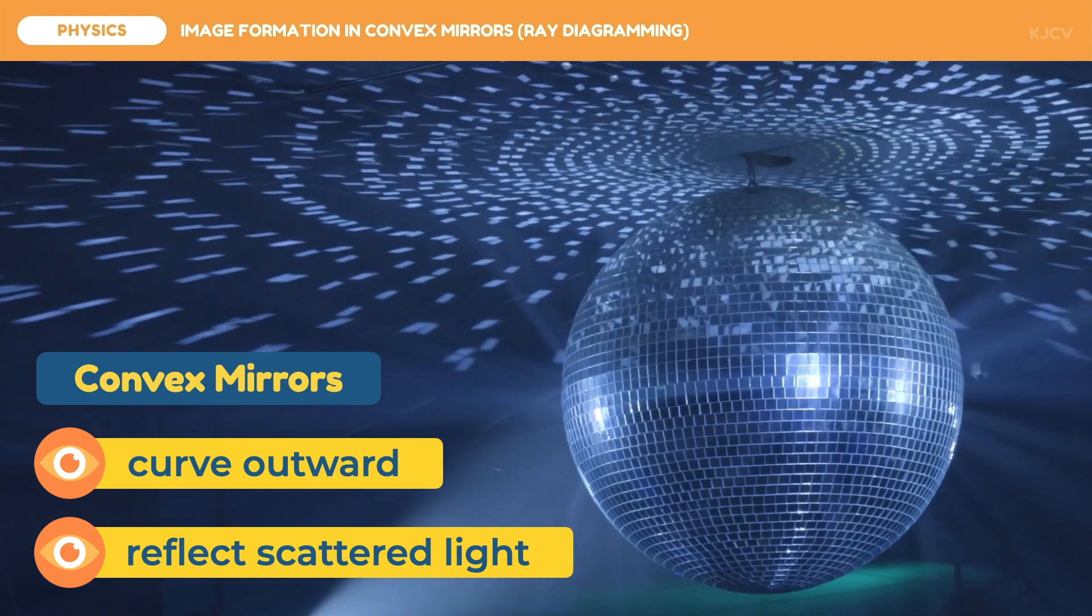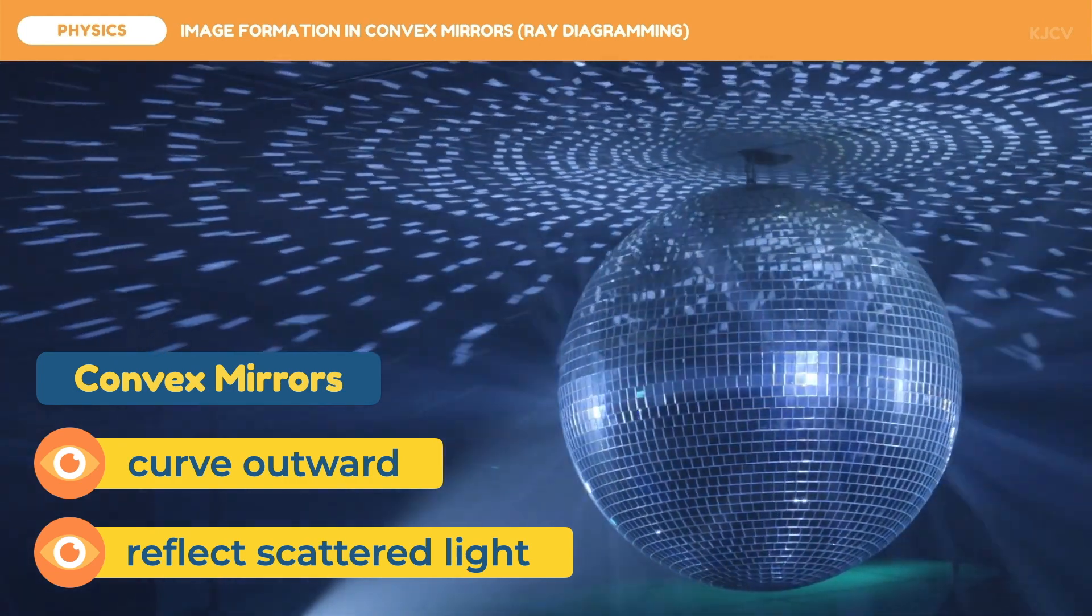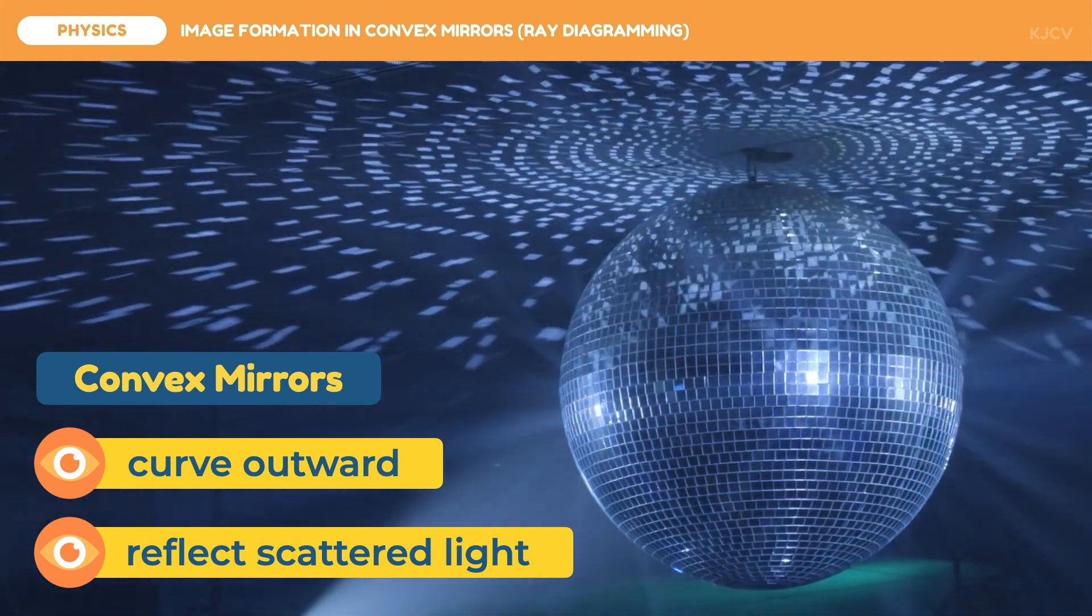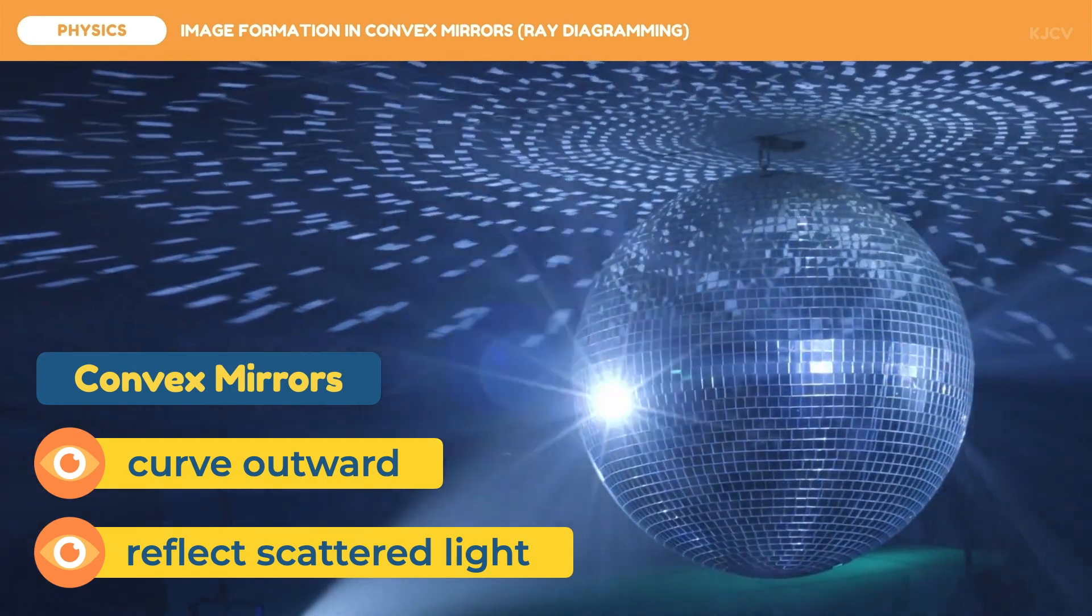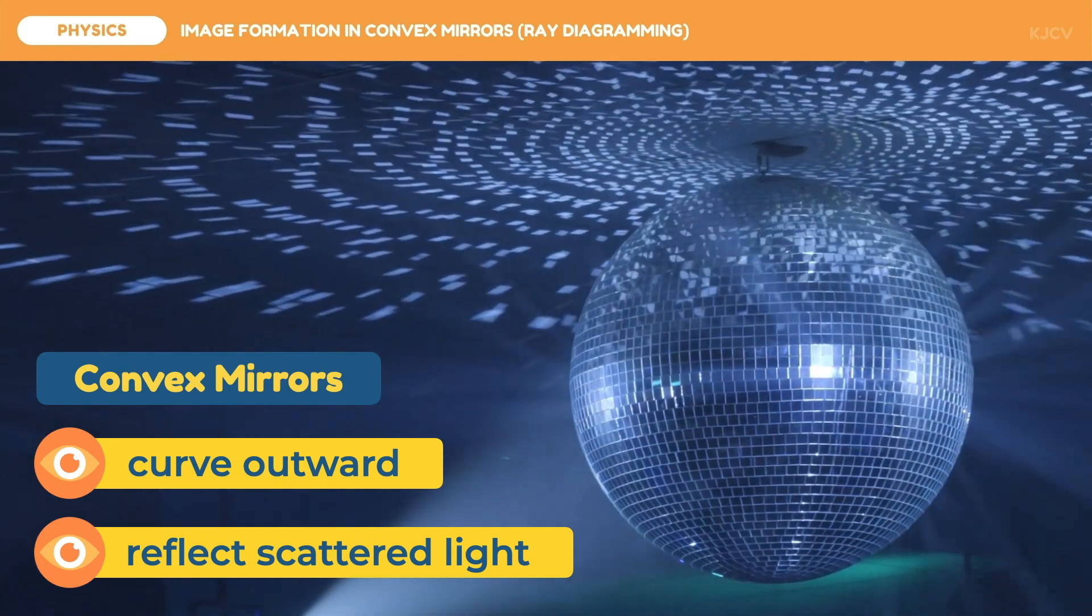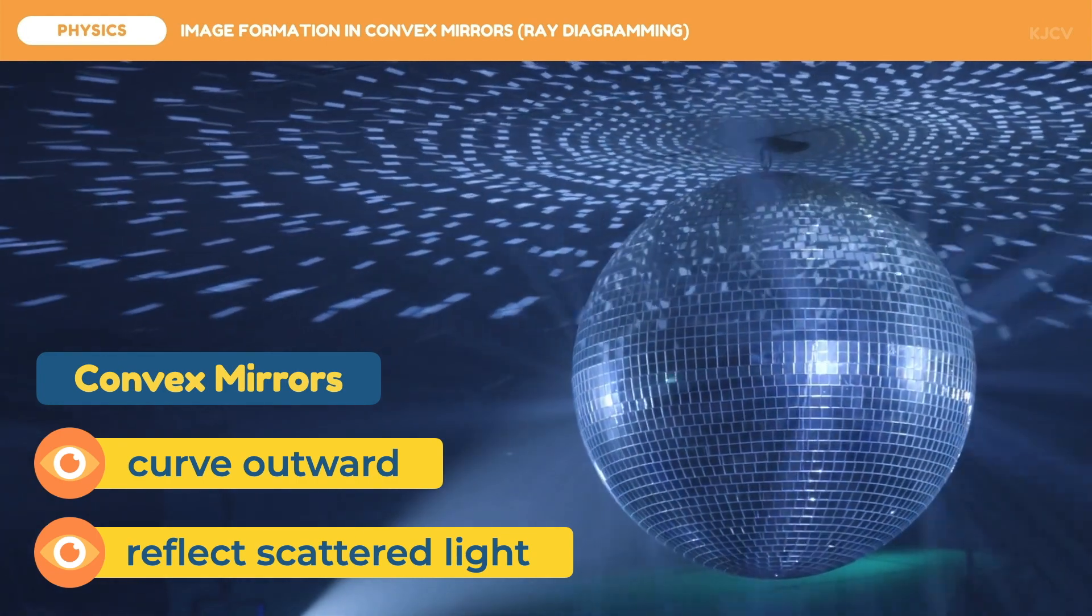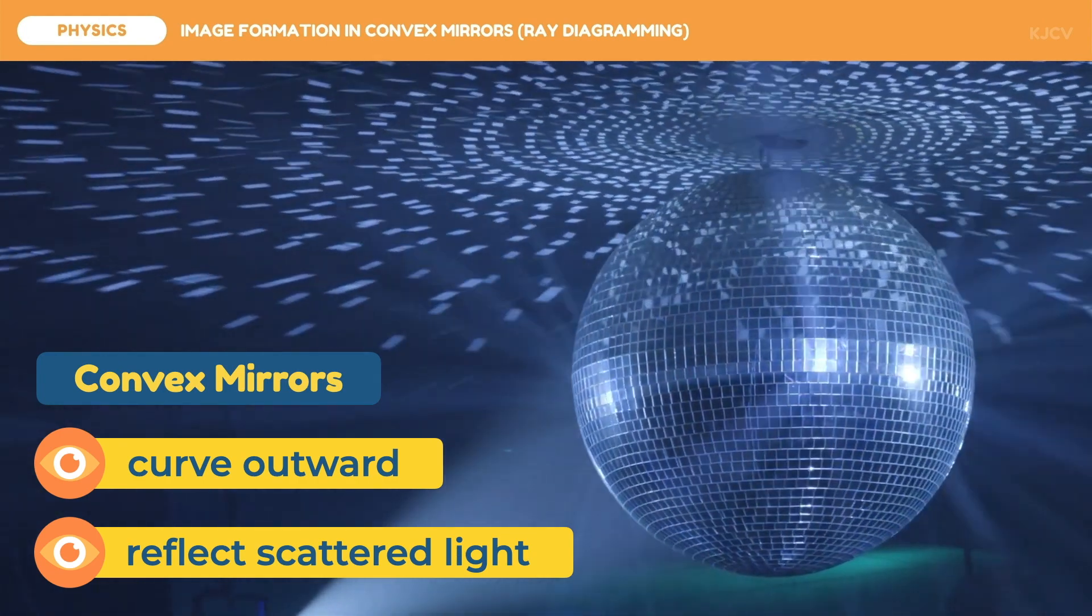Convex mirrors can be easily remembered as mirror balls. In mirror balls, the reflective surface is on its exterior, making the reflective surface curve outward which meets the light incident onto it. Because of its geometry, it is used to reflect and scatter light just like in this mirror ball.